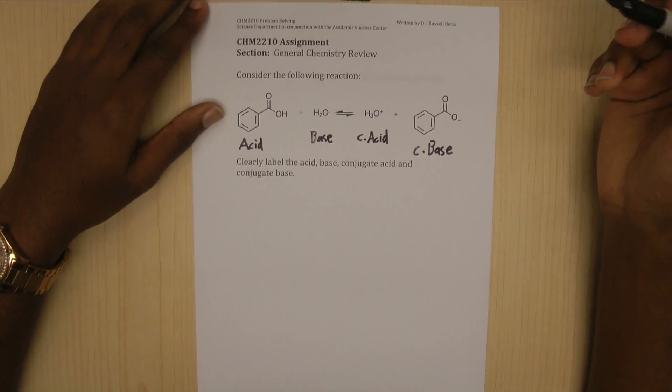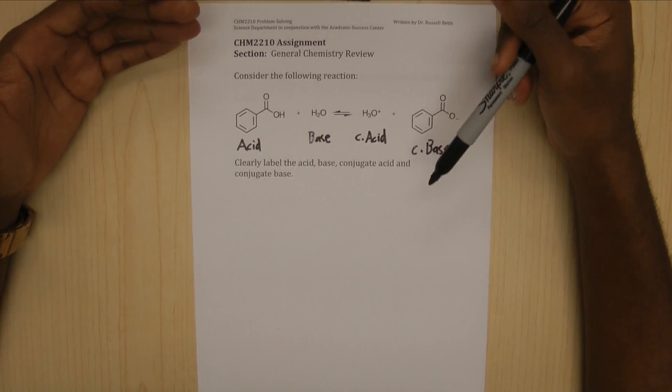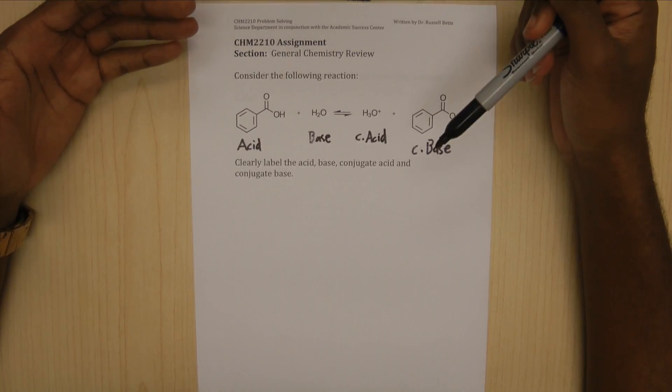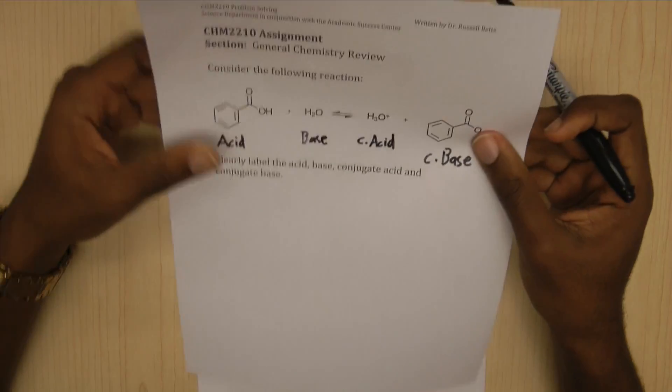And that's all there is to it. So when you're doing problems like this, just try to identify what is accepting a proton or what is donating a proton. And that's how you can get through these. Thank you.